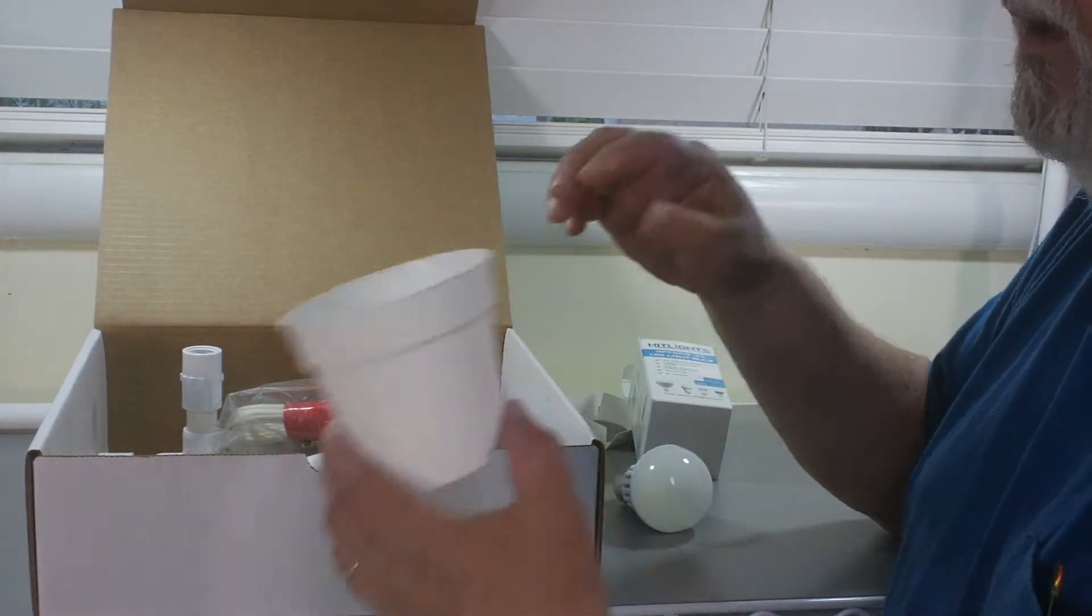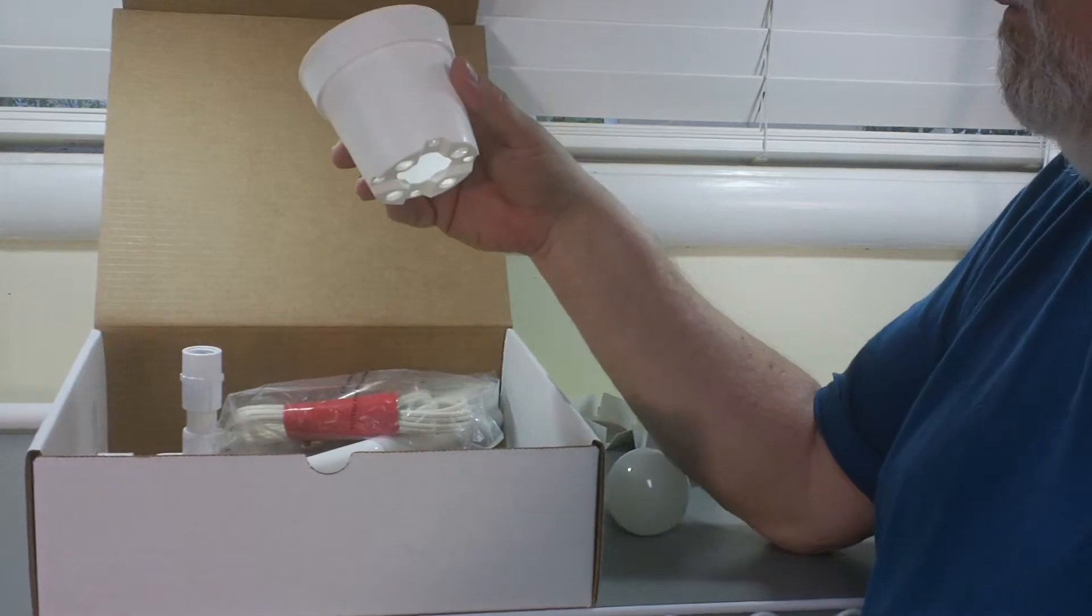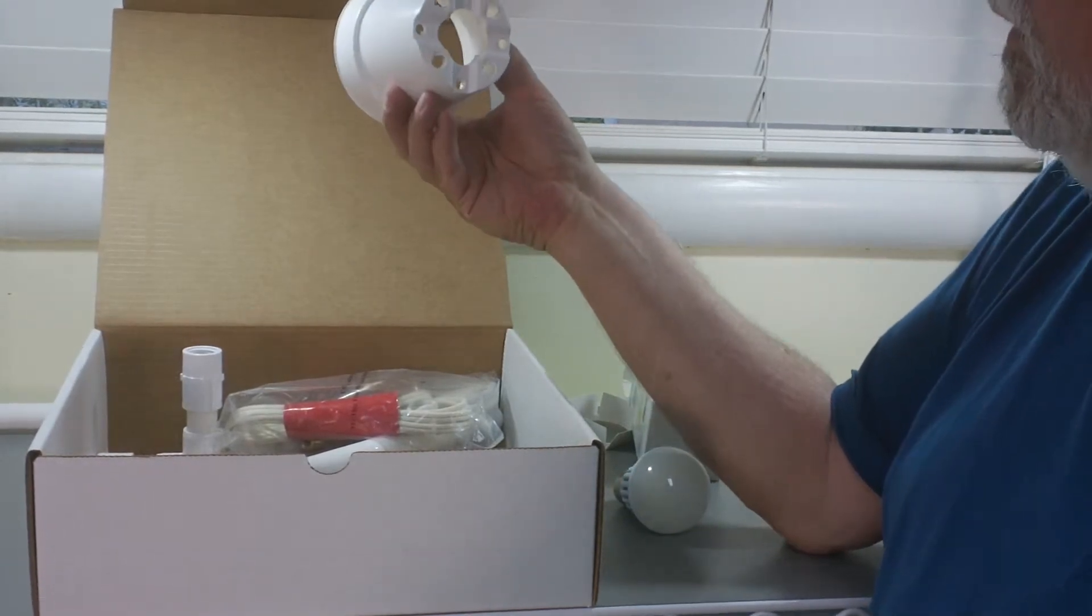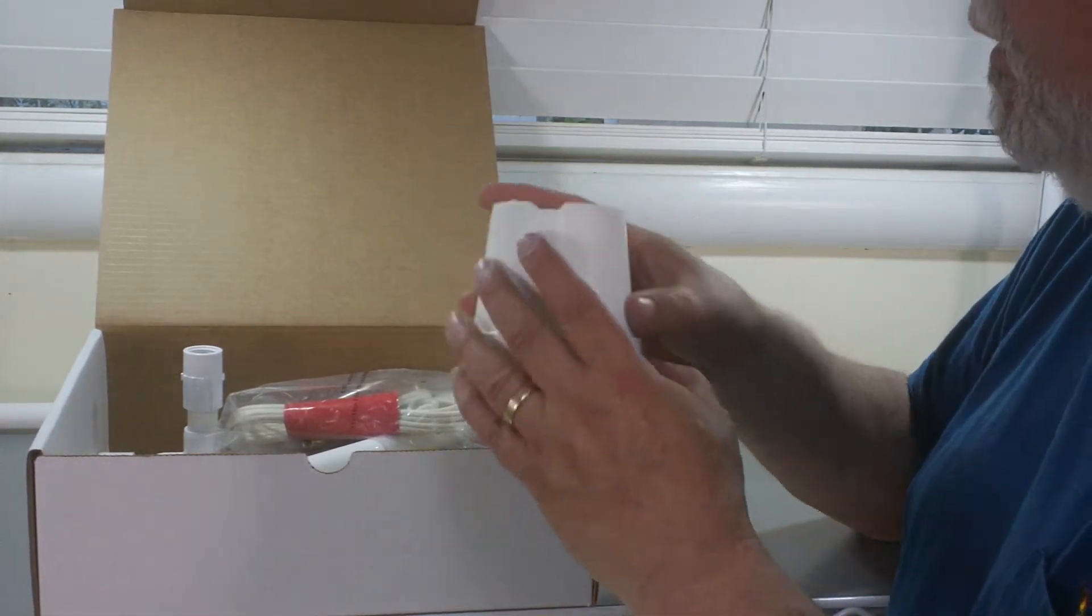Our lampshade is a nursery pot with a hole in the bottom so we can fit it onto our light fixture.